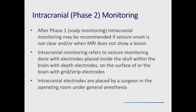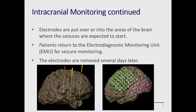After intracranial electrodes are placed in the operating room, the patient returns to the monitoring unit and we wait for seizures to occur. These include depth electrodes placed stereotactically under MRI guidance, and grid electrodes placed on the surface of the brain. Most of the time we have moved to stereo-EEG (SEEG), which appears less invasive; patients recover quickly and go home about a day after seizures are obtained.